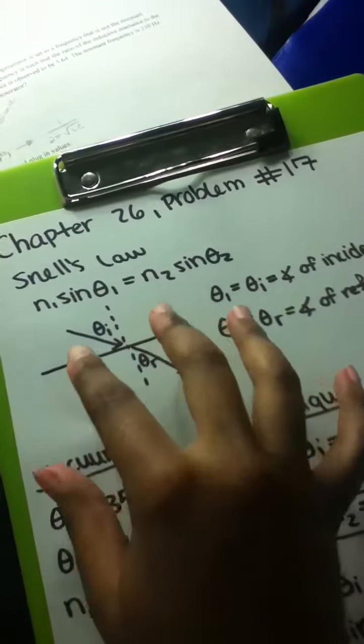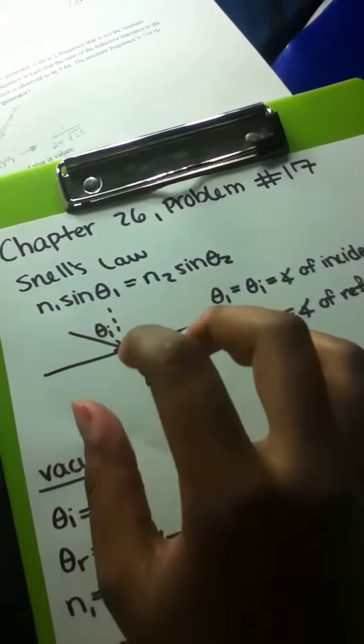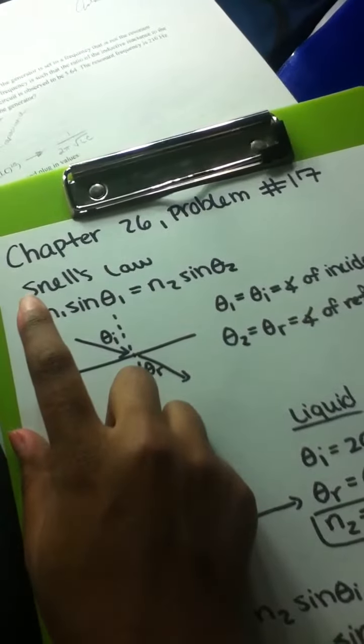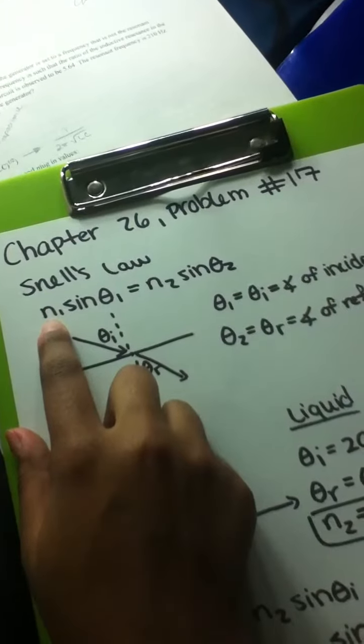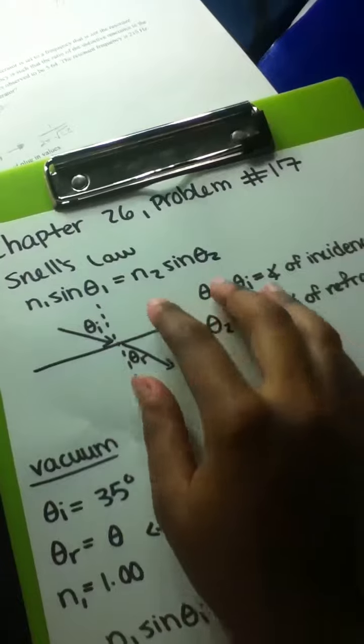Basically, what this law states, or the theory behind it, is that when light travels from a material with a refractive index represented by n₁ into a material with another refractive index, or n₂...